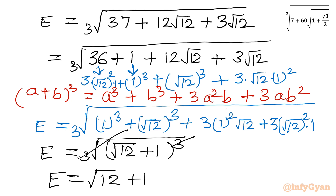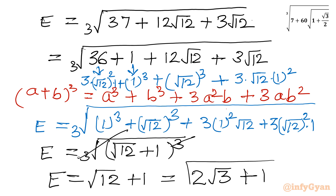So our final answer is E equals root 12 plus 1, or equivalently 2 root 3 plus 1. This is our final answer for this radical challenge. I hope this video will be meaningful to you. Do not forget to like, share, and subscribe. Bye bye, good luck and take care of yourself.